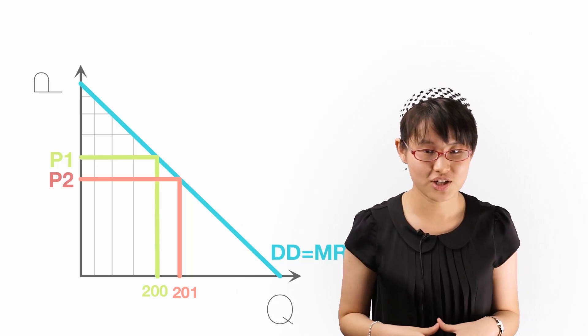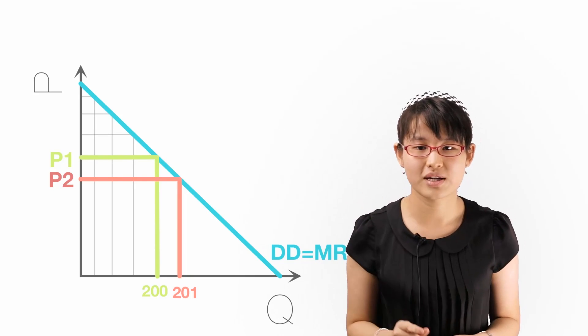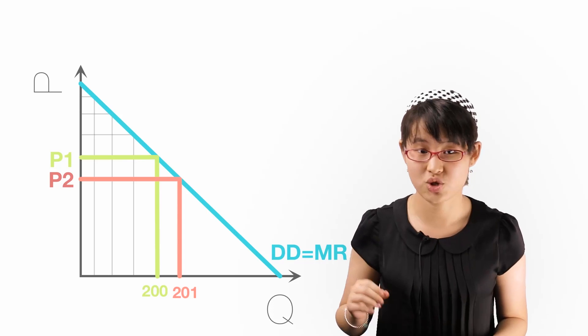With first degree price discrimination, an increase in sale does not involve lowering the price of any unit except the extra unit sold.